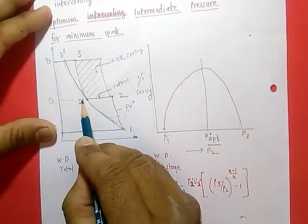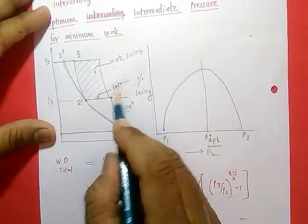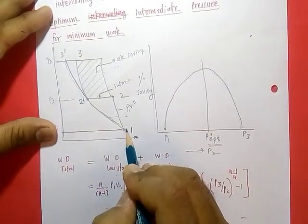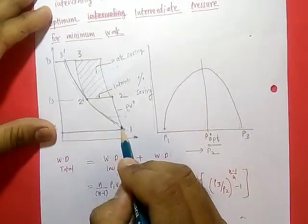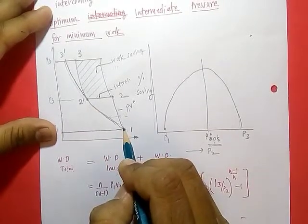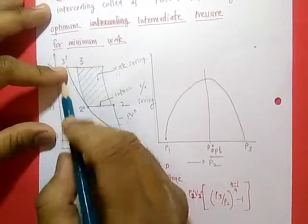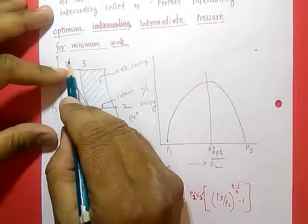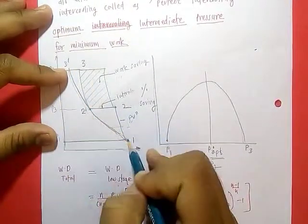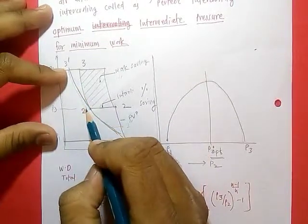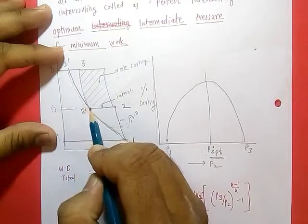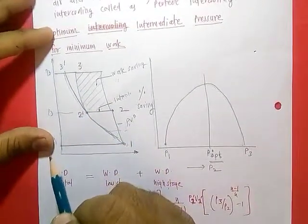As intercooling is perfect, the outlet of the intercooler is state 2-dash, and since intercooling is perfect, temperature t2-dash is equal to t1. This means if we join these two processes, they form an isothermal process. Now if t3-dash again has the same temperature as t1, then joining t2-dash and t3-dash, all these states are isothermal states.